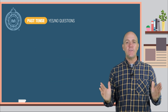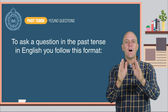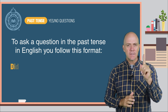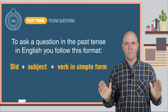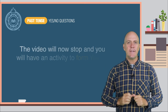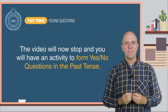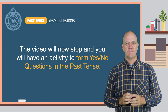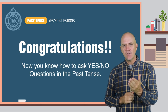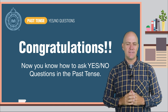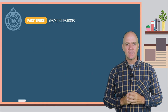So let's review. To ask a question in the past tense in English, you follow this format. The video will now stop and you will have an activity to form yes-no questions in the past tense. Congratulations! Now you know how to ask yes-no questions in the past tense. I will see you back here again for the next lesson. Good luck.